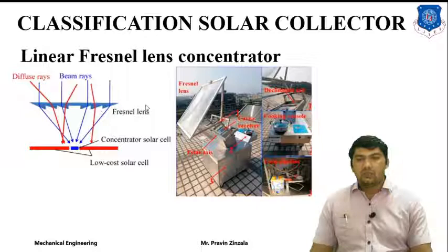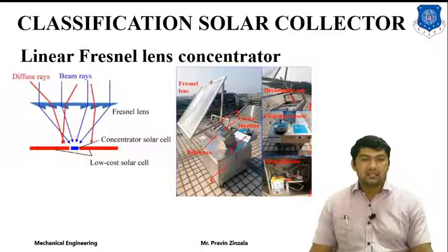The surface of the Fresnel lens concentrator has a flat top surface but a zigzag wave pattern on the bottom surface, which enables concentration of solar radiation.